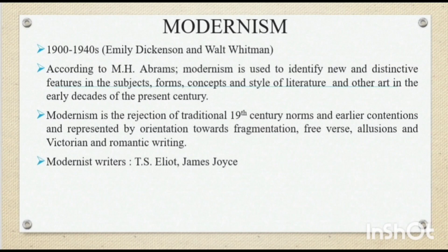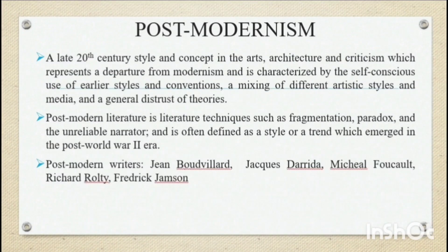Modernism is used to identify new and distinctive features in the subjective forms, concepts, and styles of literature and other arts in the early decades of the present century. Postmodernism refers to the late 20th century style and concepts in arts, architecture, and criticism, representing a departure from modernism, characterized by the subconscious use of earlier styles and conventions, a mixture of different artistic styles and media, and a general discourse of theories.